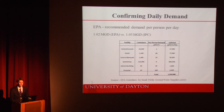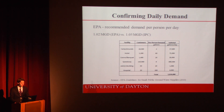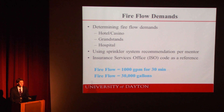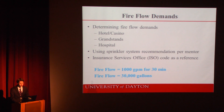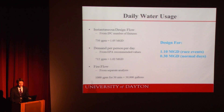An additional analysis based on EPA numbers confirmed daily usage at 1.02 million gallons per day for upwards of 110,000 customers. Fire flow demands also need to be accounted for — using a sprinkler system throughout and the Insurance Services Office Code, a fire flow of 1,000 gallons per minute must be sustained for 30 minutes, equating to another 30,000 gallons. In all, we determined a maximum conservative daily usage of 1.1 million gallons per day for race events, and approximately 300,000 gallons per day as a maximum for off-season events.